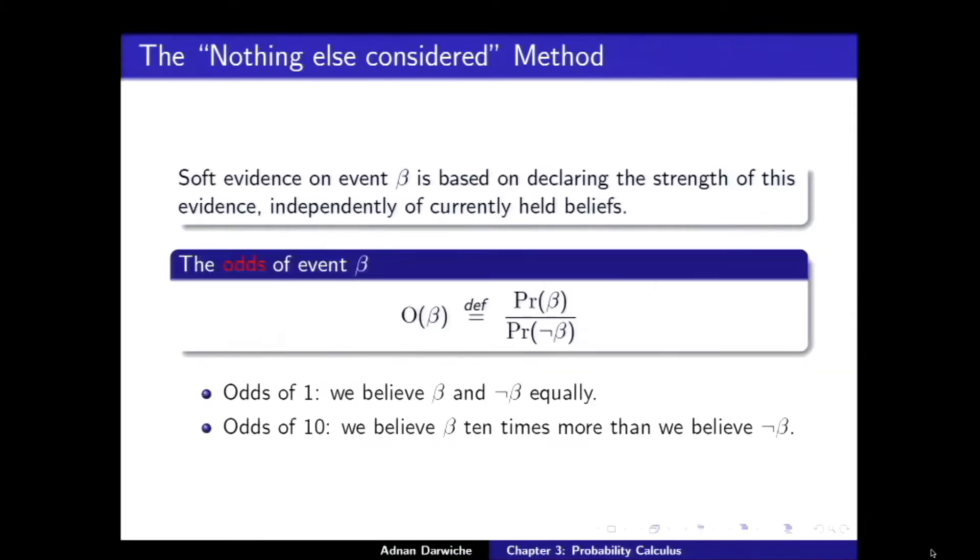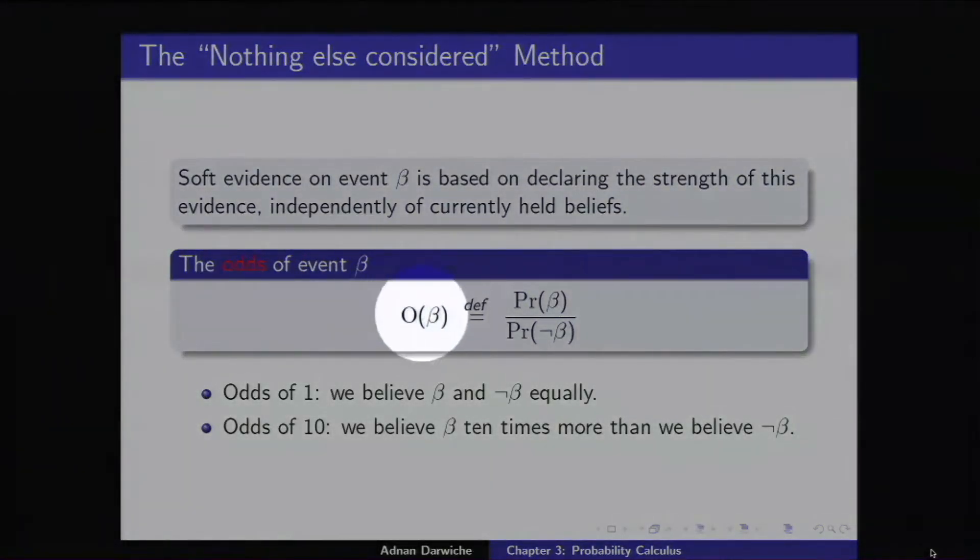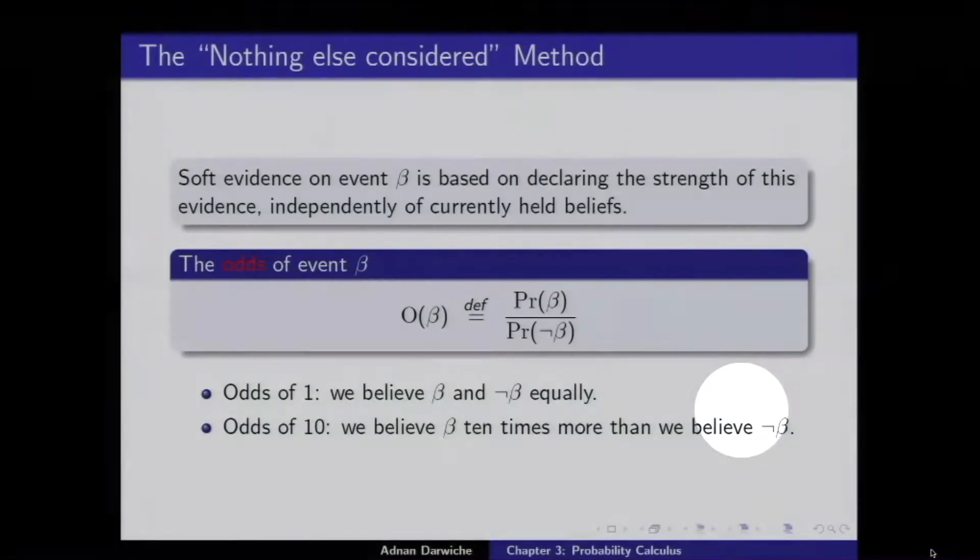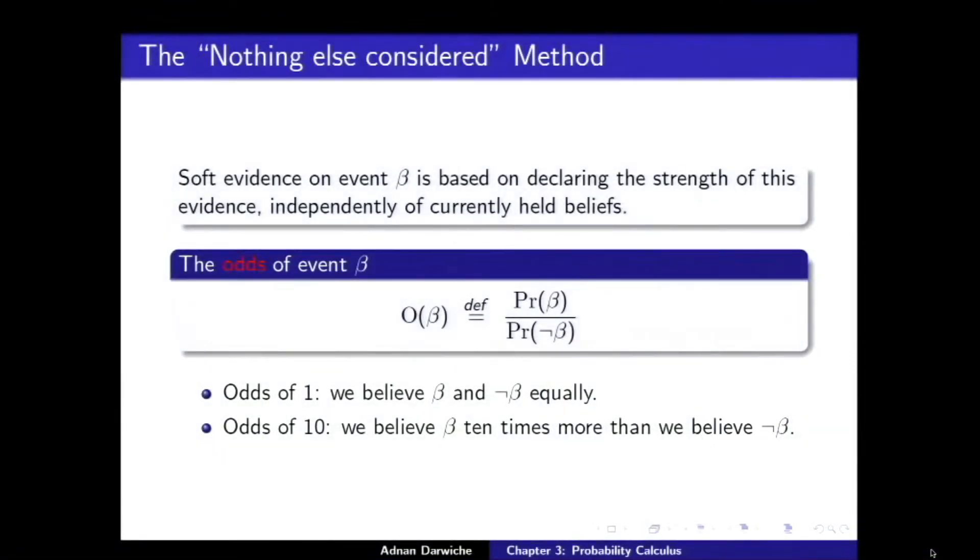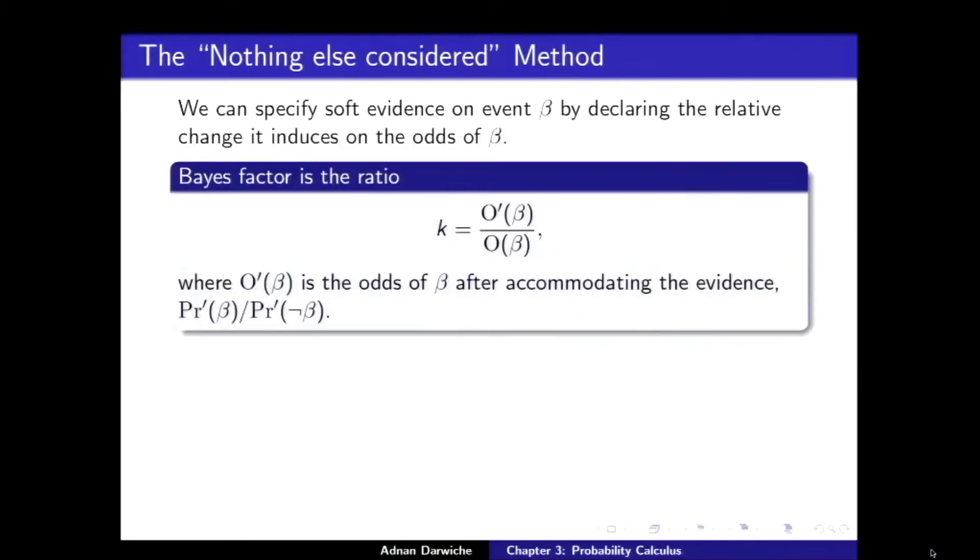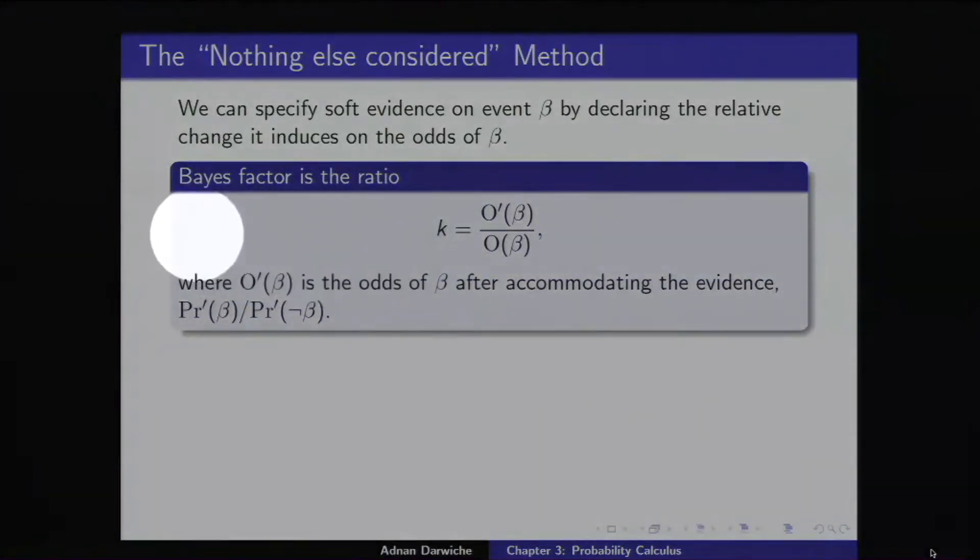For this, we need the following notion. Some of you may have heard of odds. So what's the odds of beta? The odds of beta is just the probability of beta over the probability of not beta. Odds of 1 means I believe beta and not beta equally. Odds of 10, I believe beta 10 times more than that.